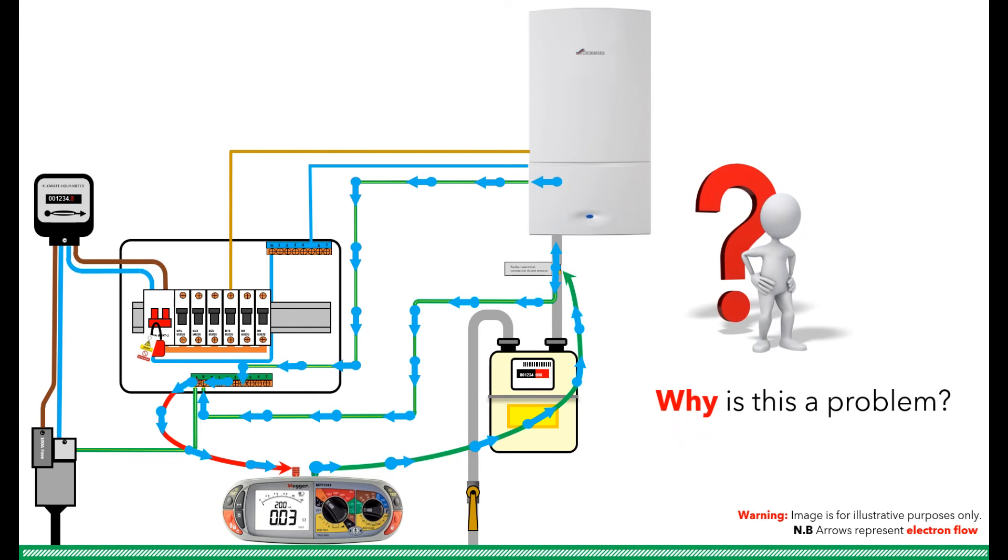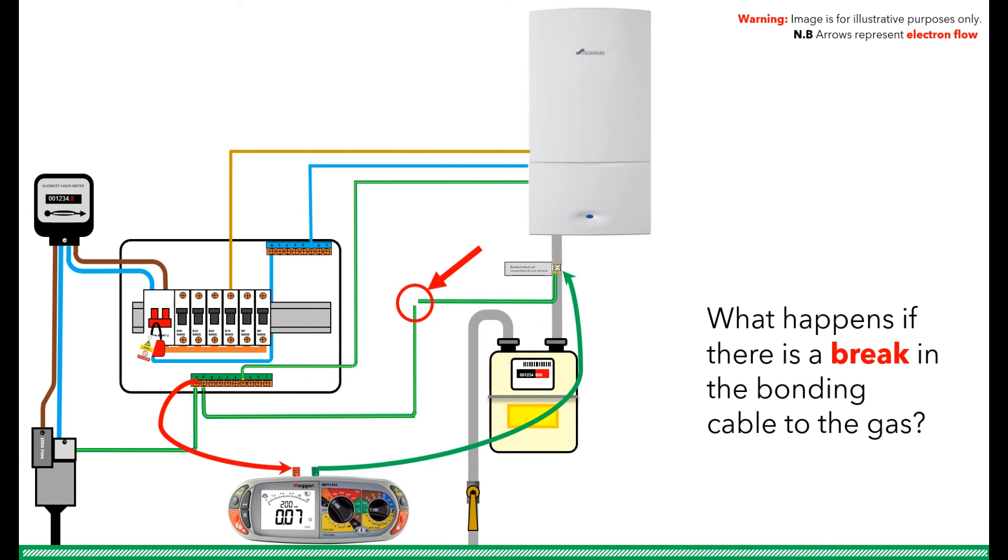So why is that a problem? Because surely that means the resistance is lower, and that is a good thing. After all, we were told the lower the resistance in a healthy circuit, the better. Well that is true, but what happens if there is a break in the main bonding conductor and we no longer have continuity? Our low ohm resistance tester will display a resistance reading as the circuit is still completed through the CPC, but it means we potentially no longer have the protection to the extraneous metal gas pipe that we discussed in the first part of this video.